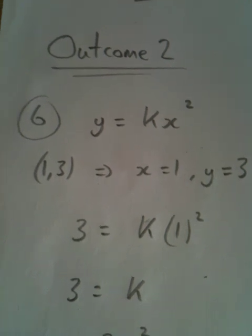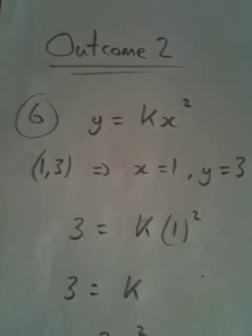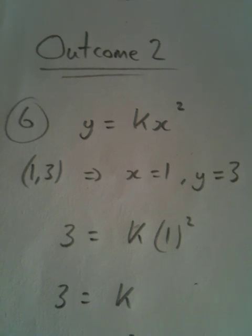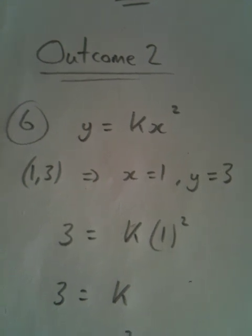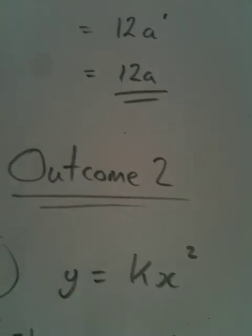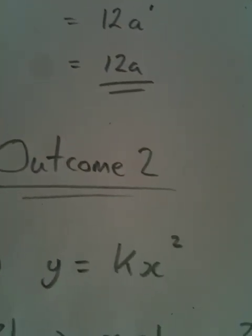So here we have outcome 2, a picture of a quadratic graph going through the point 1,3. So we know it's of the form y equals kx squared, it tells us that in the question.